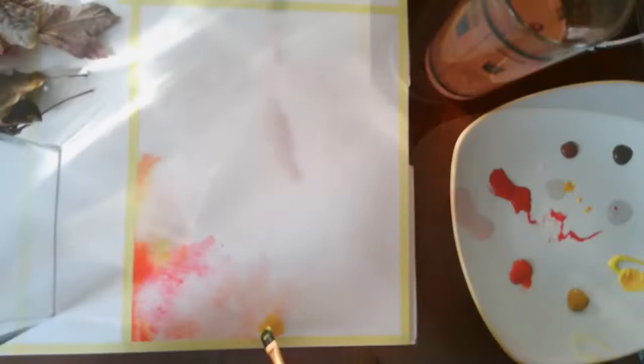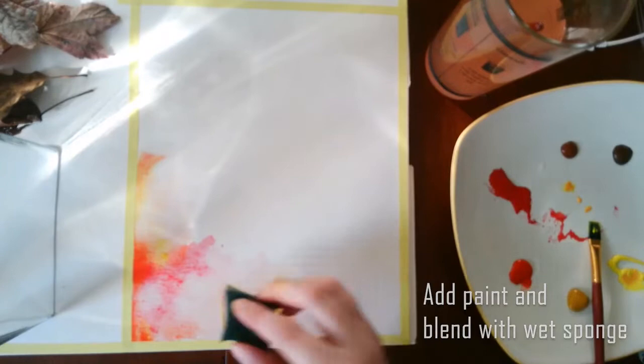Add a little bit of paint with your paintbrush and with a wet sponge blend it out. Continue this process throughout the entirety of your painting space.